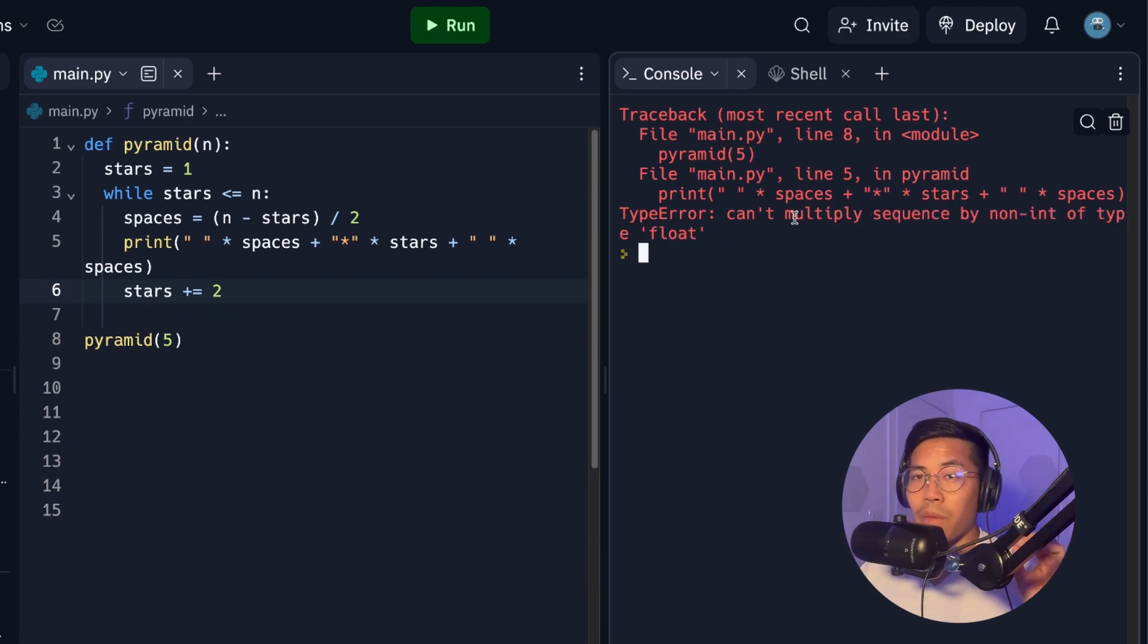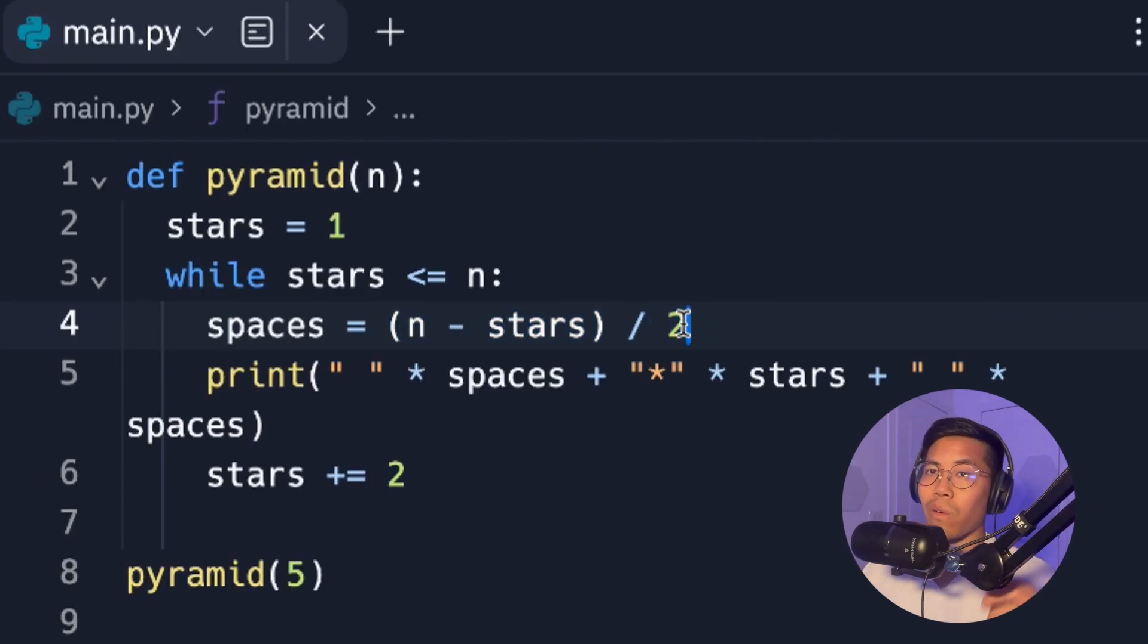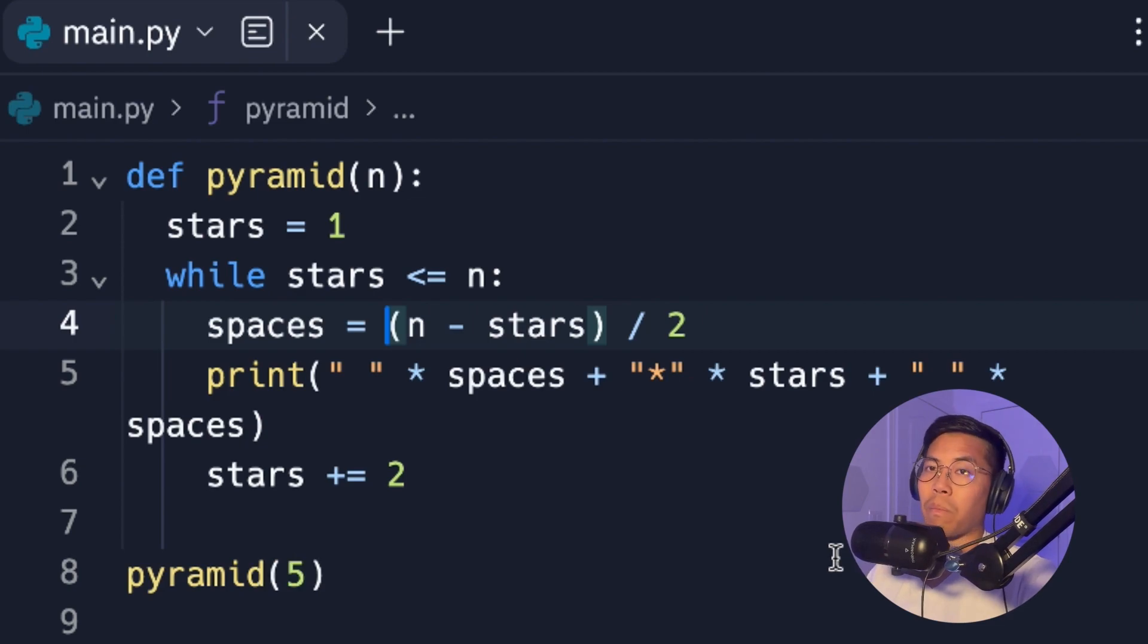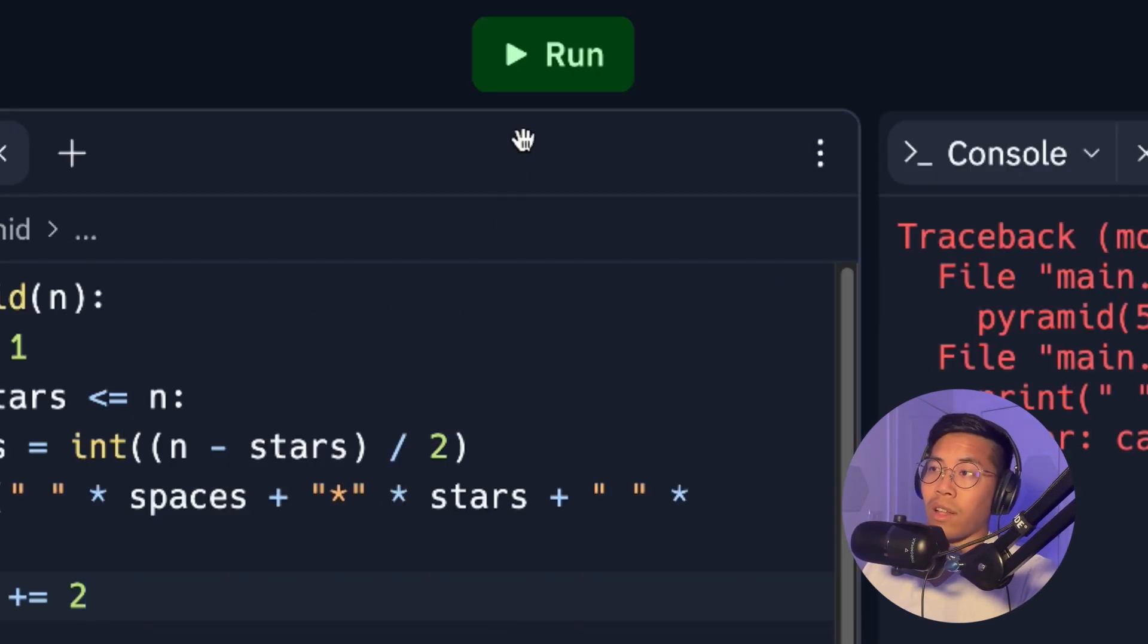So if you remember from a very early lesson, we talked about different types. So when we're dividing by two, we're actually converting this integer into a float. So to fix this error, all we have to do is turn the spaces back into an integer. We can achieve this very easily by casting this float back into an integer. So all we have to do is put int in the front and open the parentheses like this, and this will turn it back into an integer. So now let's run our code.